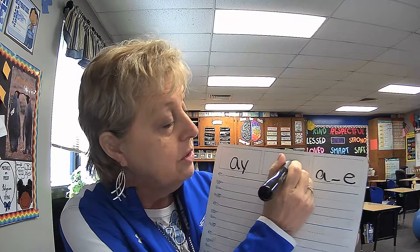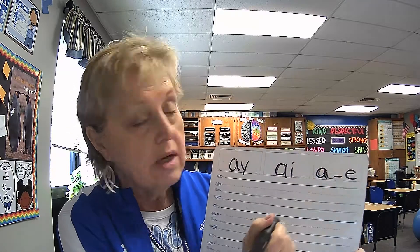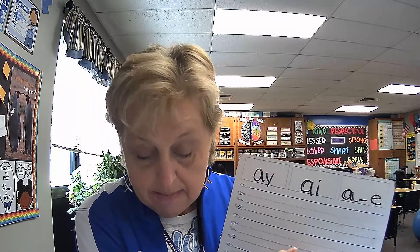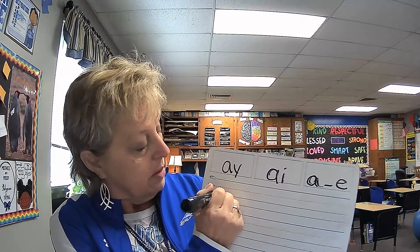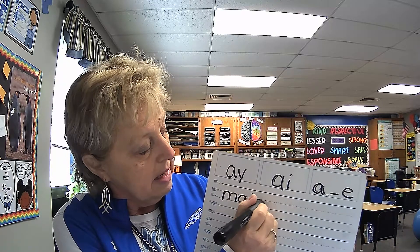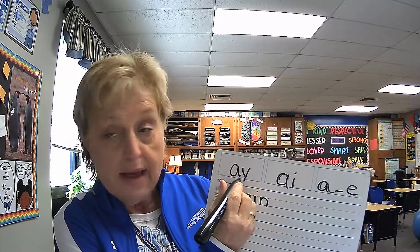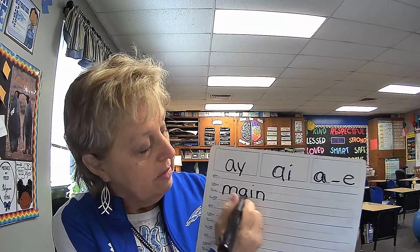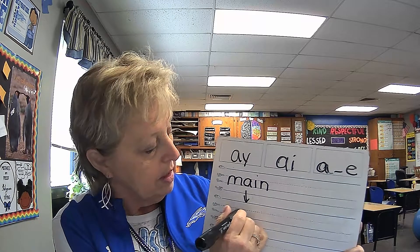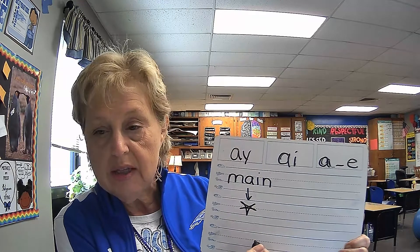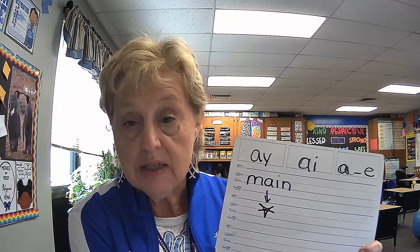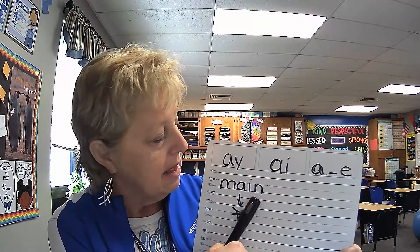At the top of your slide, put A-Y, A-I, and A consonant E. Here's our first word — echo me: main. I'm going to begin with M-A-I-N. It has a consonant at the end, so it can't be A-Y. This word, main, with A-I, means the most important thing. For example, Main Street is the most important street in a town — it's where all the businesses are.